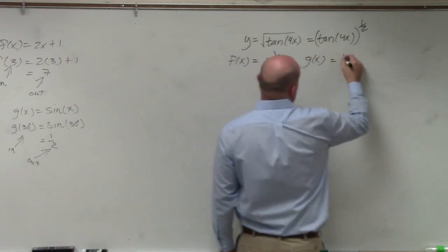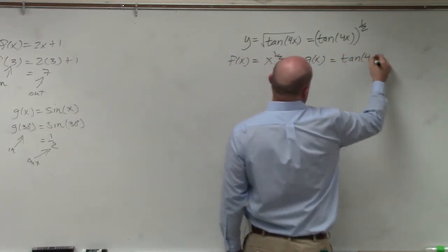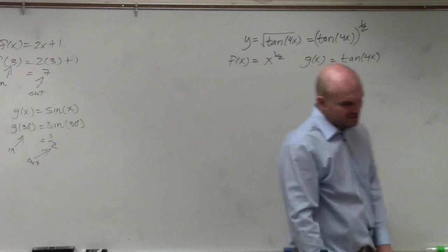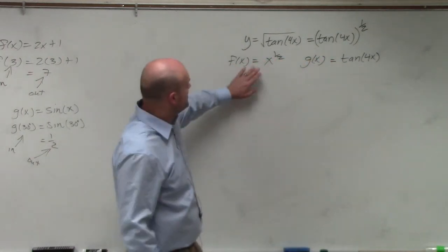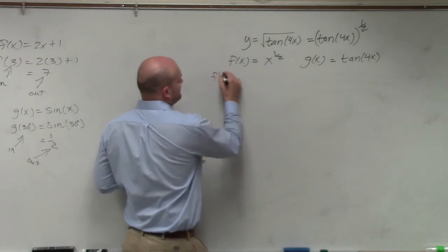My inside function, g of x, is going to be tan of the 4x. The derivative of tangent is going to be secant squared. So now let's just go ahead and find the derivative of each of these separately.